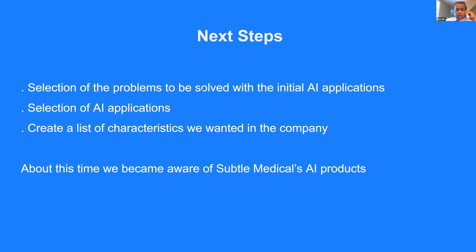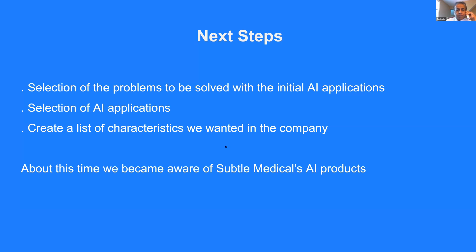Many things were happening at the same time. Just about when we were thinking about all of this, we also learned that Subtle Medical offers two AI products that address the two topmost problems we had and were hoping to solve with AI. The first was PET CT scans and the second was MRI scans. The problem with PET CT scans at my institution was it took about 24 minutes of acquisition, which was very long. Patients became uncomfortable on the scanner table, they would move causing motion artifacts, and sometimes we would have to call them back and inject them with additional dosage, which would increase the cumulative radiation dose.